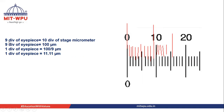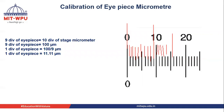So we have found that 9 divisions of the eyepiece micrometer equal 10 divisions of the stage micrometer. Ten divisions of the stage micrometer equal 100 micrometers (since one division = 10 micrometers). Therefore, 9 eyepiece divisions = 100 micrometers, so one eyepiece division equals 100 divided by 9, which is 11.11 micrometers. This is our calibration factor, and we must remember it.